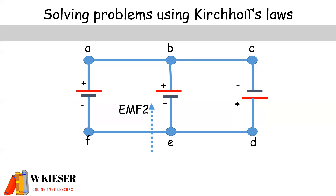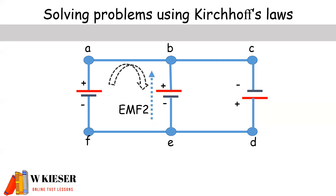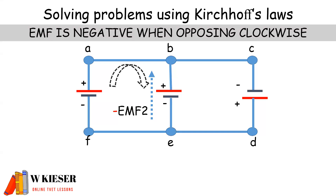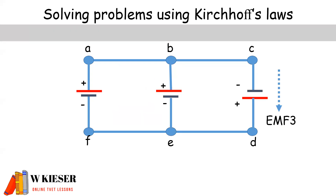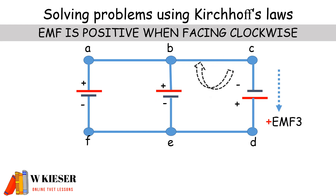For the second battery, the direction of the EMF is in the same direction as the conventional current flow. And when we look at the clockwise direction for the loop, you'll see that it is opposing the clockwise direction. So therefore, the EMF is negative when opposing clockwise. For the third battery, the terminals are switched around. So therefore, the direction of the EMF is in the same direction as conventional current flow from positive to negative, and this is in the same direction as the clockwise direction. So therefore, the EMF will also be positive.